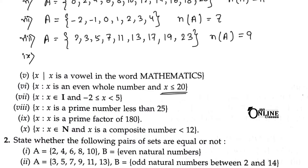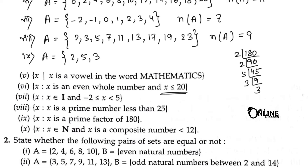Sum number 9: x is a prime factor of 180. If you factorize 180, you get 2 × 90, then 45, then 5 × 9, then 3 × 3. So the prime factors are 2, 5, and 3. The cardinal number n(A) equals 3 and it is a finite set.